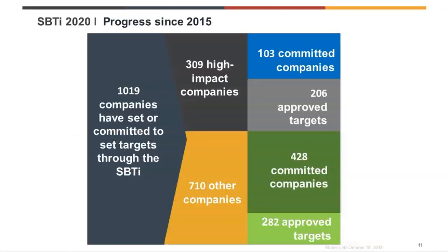We've come a long way in a short period of time. On October 8th, we released a press release officially acknowledging that over 1,000 companies globally have set or committed to setting science-based targets. Over 300 of those are what we call high-impact companies, while another 700 are also part of the program. We've now surpassed 500 approved targets — a big milestone for the SBTI.